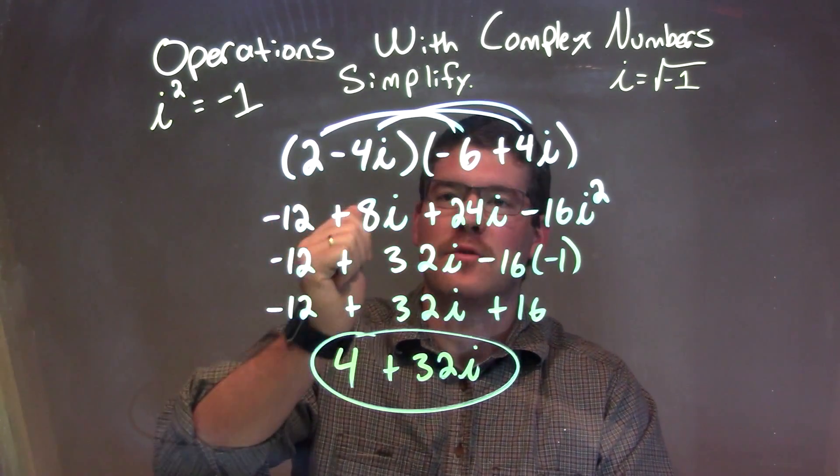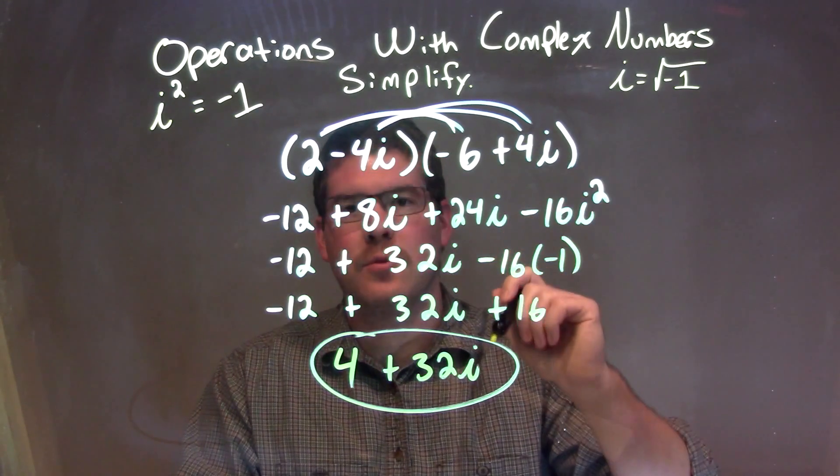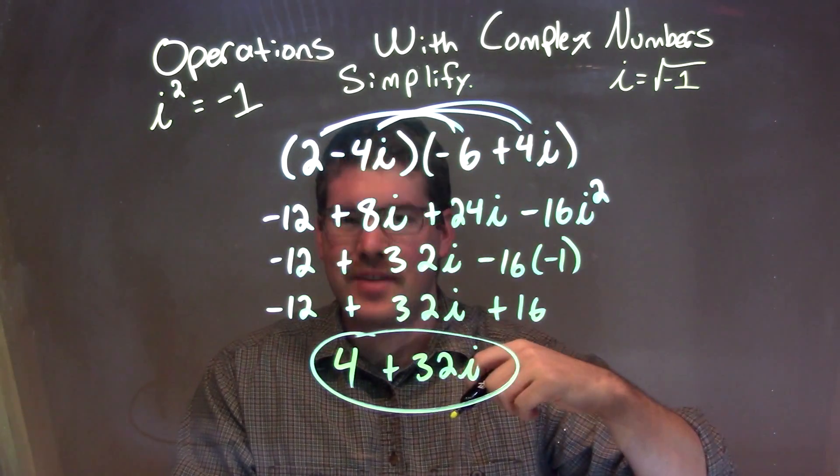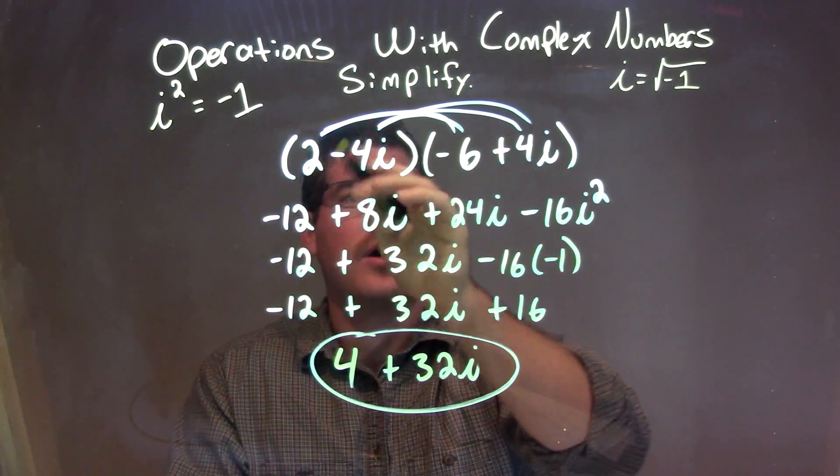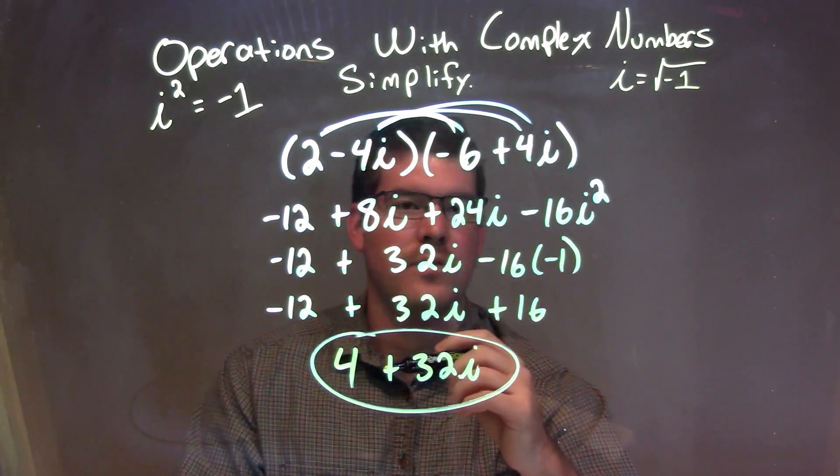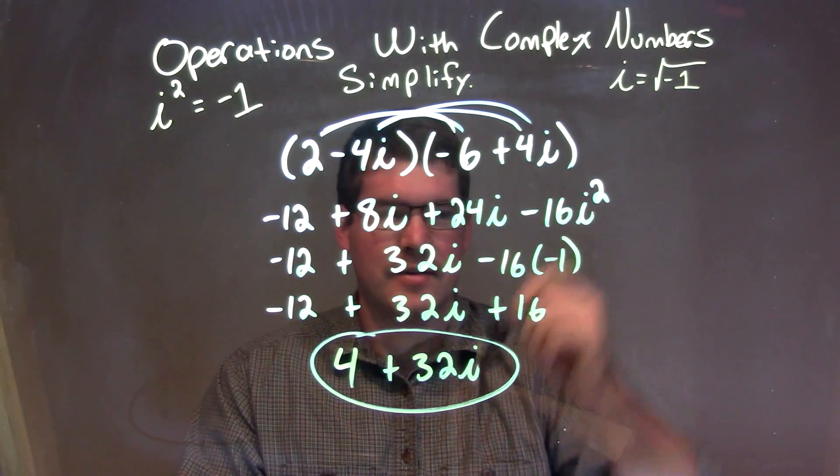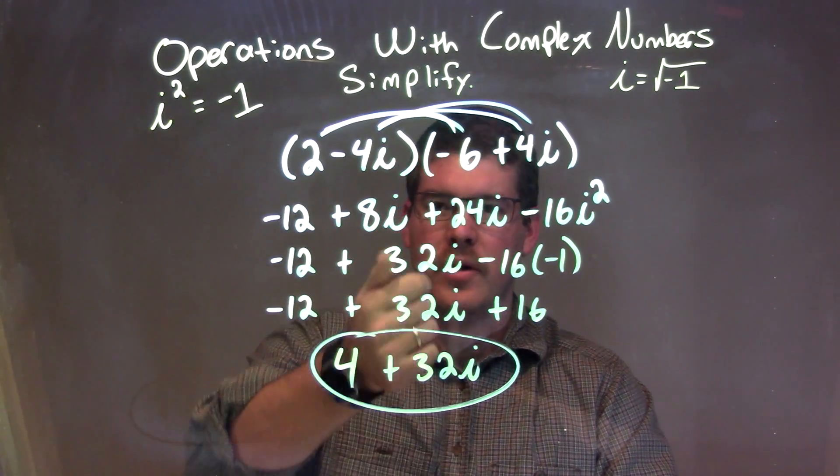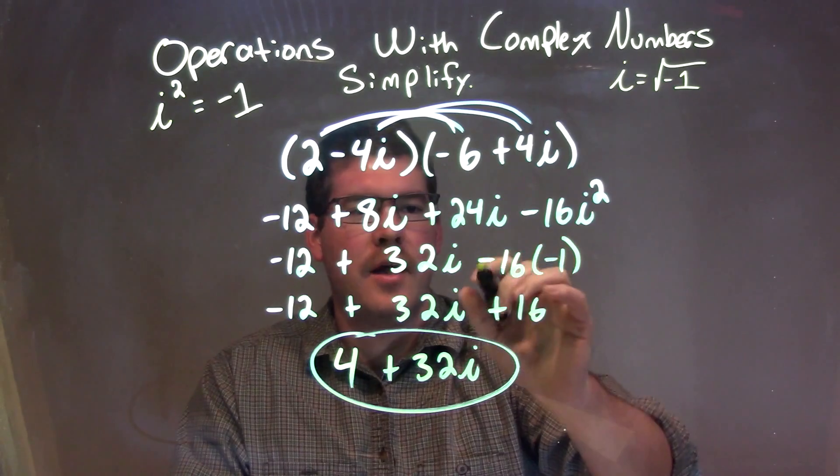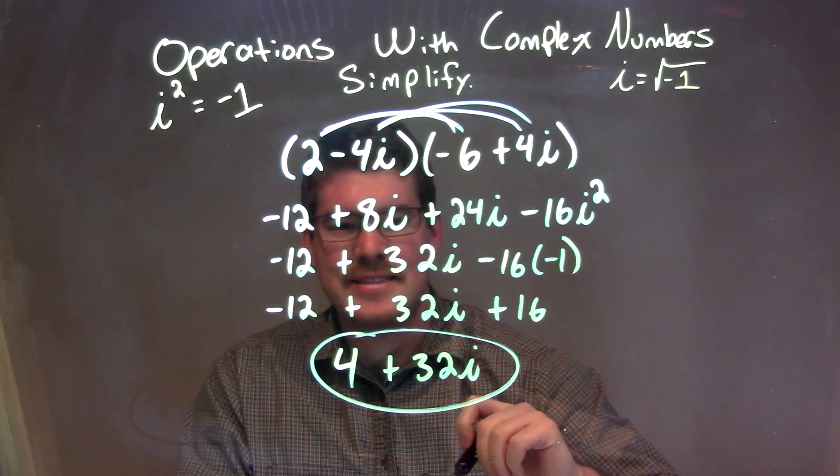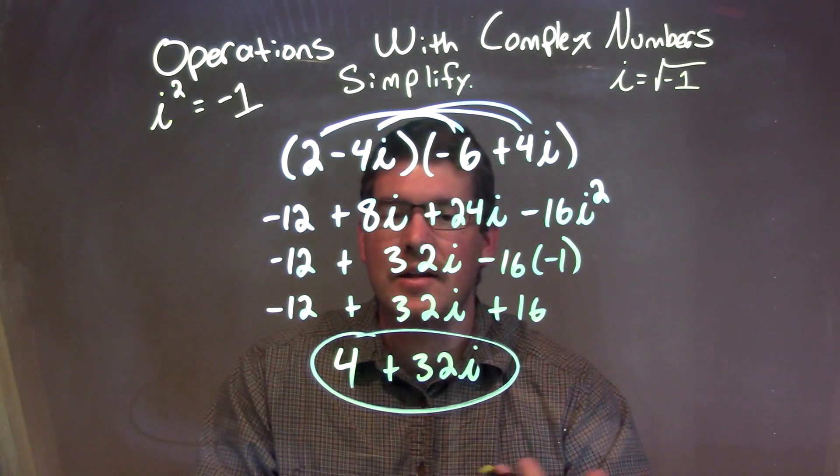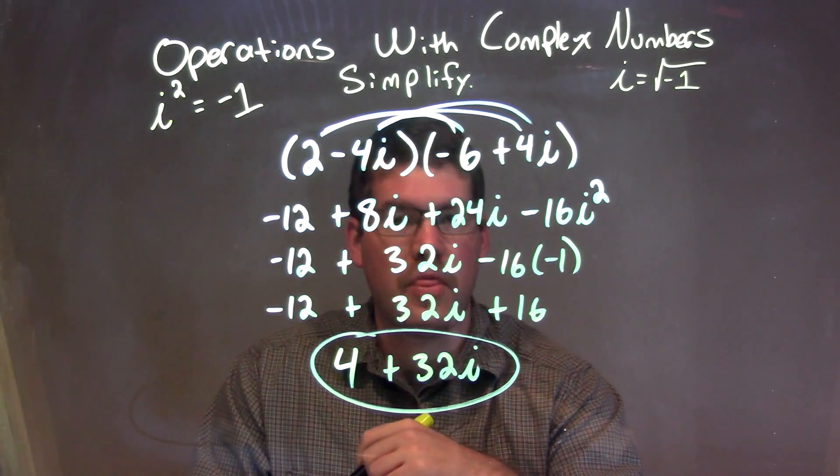Let's recap. We're given 2 minus 4i and we multiply that by negative 6 plus 4i. We FOIL, multiplying all parts in the first parentheses by all parts of the second parentheses. This gives us negative 12 plus 8i plus 24i minus 16i squared. Combine the two in the middle: 8i plus 24i is 32i. Then i squared becomes negative 1, so negative 16 times negative 1 becomes positive 16. We combine that positive 16 with negative 12 to get 4. Our final answer is 4 plus 32i.